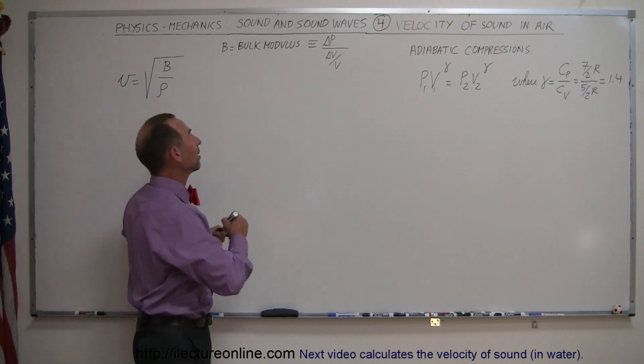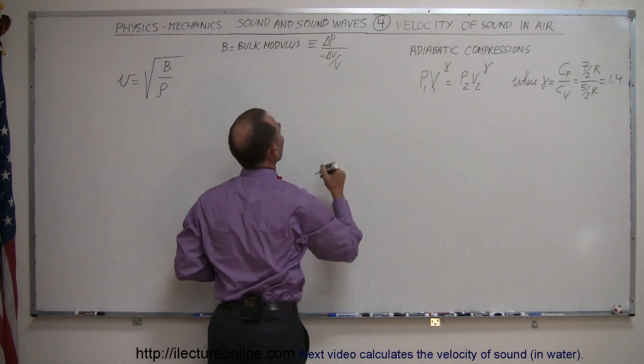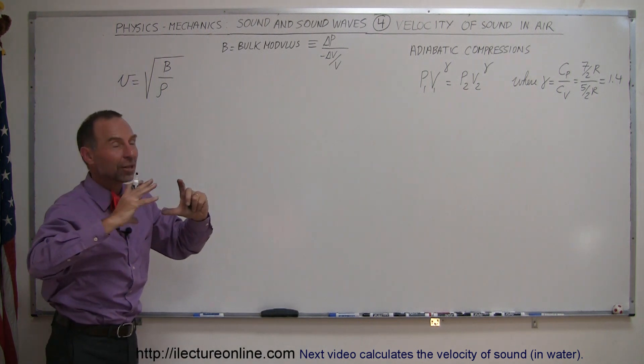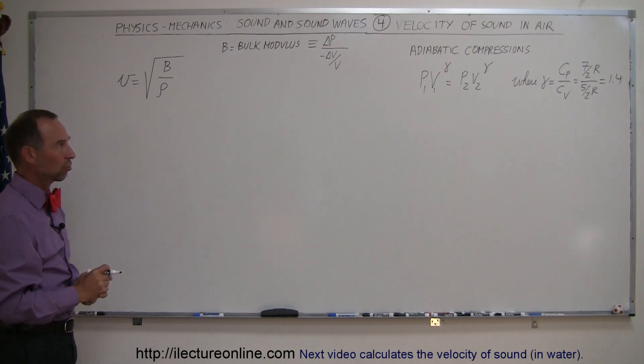That is minus delta P or minus delta V over V, because you're actually making it smaller. So it's a decrease in the volume with an increase in the pressure.